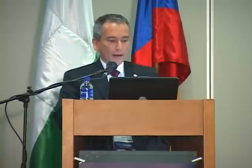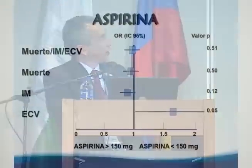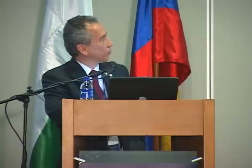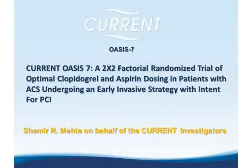Otro metaanálisis compara dosis altas versus dosis bajas de aspirina: las dosis altas, consideradas más de 150 mg, tienen mayor disminución en eventos trombóticos y reinfarto, mientras que dosis bajas protegen más frente a enfermedad cerebrovascular. El paciente con alto riesgo de sangrado cerebrovascular se beneficia de dosis bajas; el de alta carga trombótica y alta posibilidad de reinfarto se beneficia de dosis más altas. El estudio OASIS-7 es un factorial 2x2 que aleatorizó pacientes comparando dosis altas versus estándar de clopidogrel y de aspirina.